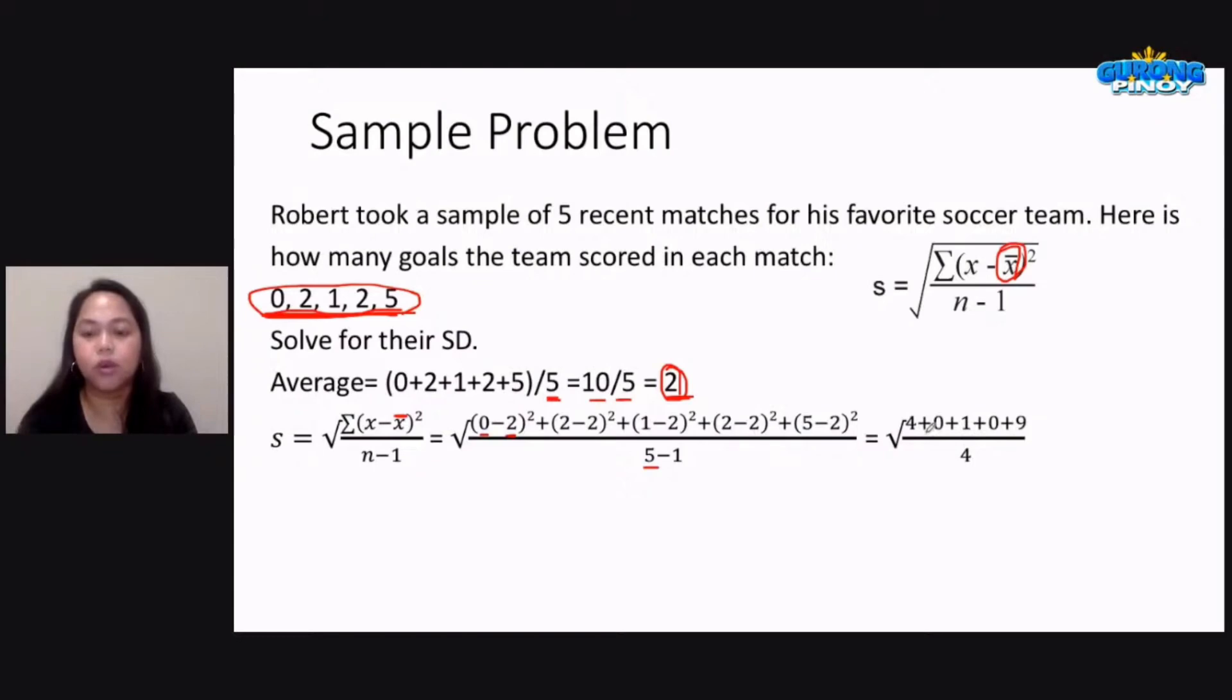Then the last score, we have 5 minus 2, that would be 3, squared, so 3 times 3, that would give us 9. So that's 4 plus 0 plus 1 plus 0 plus 9 over 4. The 4 po is taken from 5 minus 1, so galing na po siya sa 5 minus 1.